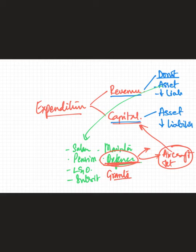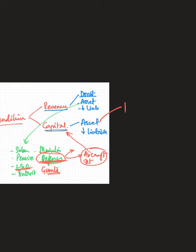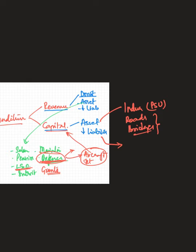The grants that the central government gives to the states or to other countries also come under revenue expenditure, because it is not creating any asset nor reducing liabilities. Law and order spending and maintenance also come under revenue expenditure. Whereas capital expenditure is any expenditure that creates an asset or reduces liability — for example, building industries, setting up new PSUs, building roads or bridges, or repaying loans.